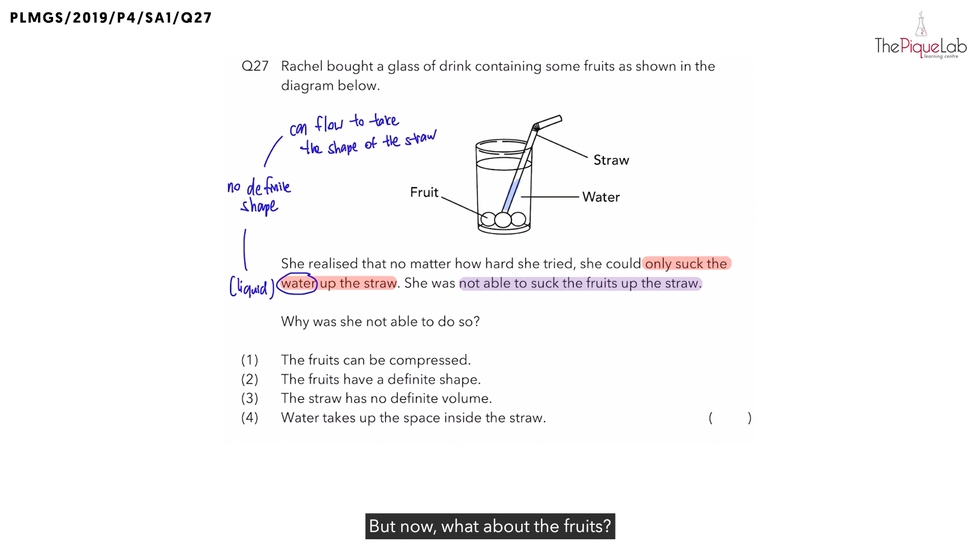But now, what about the fruits? How come the fruits cannot be sucked up then? Because remember, fruits, unlike water, is it a liquid? No, it is actually a solid. And because it is a solid, remember, solids, what properties do they have? They have a definite shape and a definite volume. But if you look at the fruits that I am highlighting in yellow, do you think the fruits can be sucked up? No. In order for the fruits to be sucked up the straw, the shape of the fruit must be able to change. But can solids do that? No. And this is because solids, they have a definite shape.